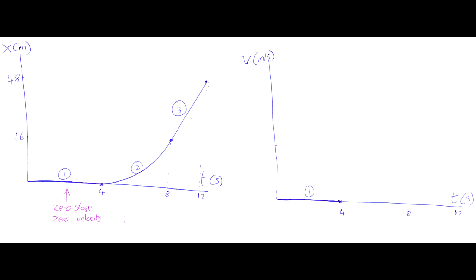Section two is a curve, and the curve starts off shallow and gets steeper and steeper. At the very start, it's completely flat — still a slope of zero, and a velocity of zero. By the end, it's really steep, so it does have a significant velocity. That steepness increases at a gradual rate. So if the slope increases in steepness gradually, we can say that the velocity also increases gradually.